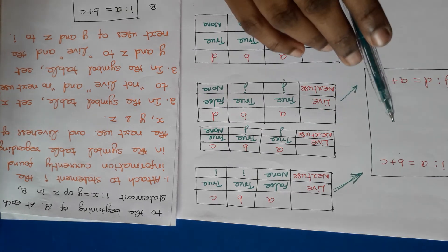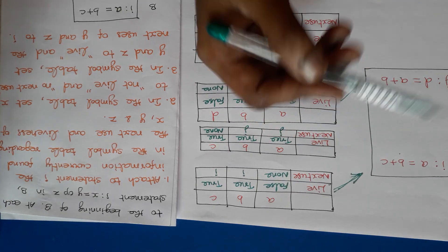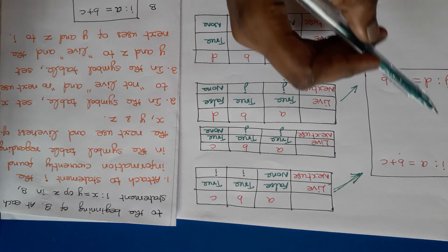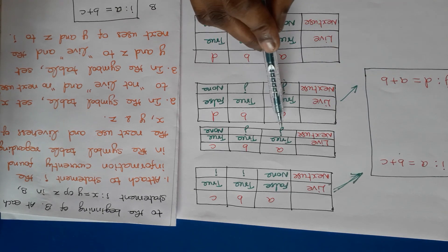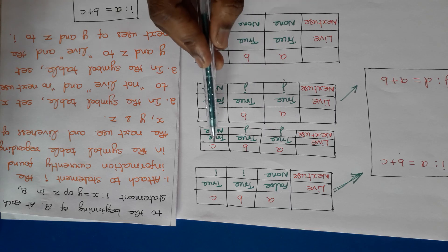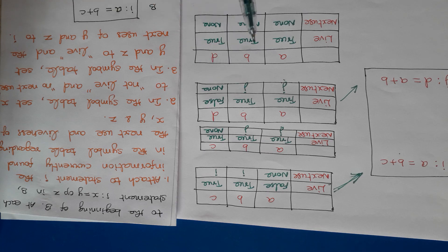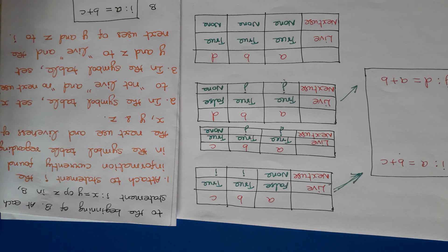After executing statement i, if we need a register, a and b have next uses at statement j so they cannot be allocated. But the register for c can be reused. Next use and liveness information can be used for reassigning a register to some other name — if the register is no longer used, it can be assigned to some other name. For register allocation, this next use information is very important. By using this algorithm, we can find the next use and liveness information for any three-address statement.